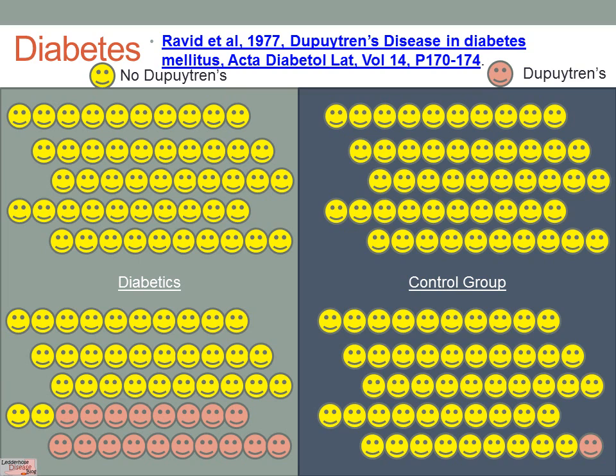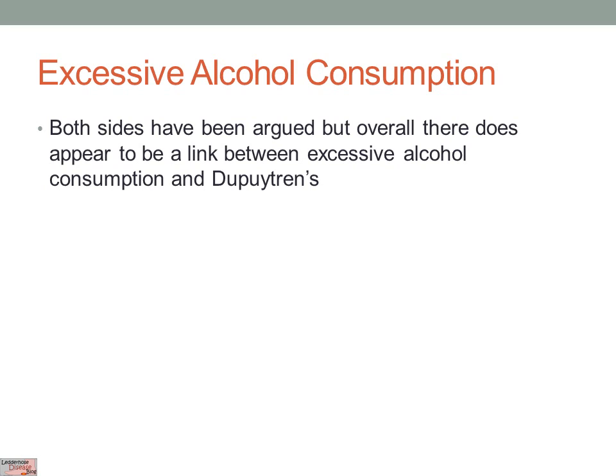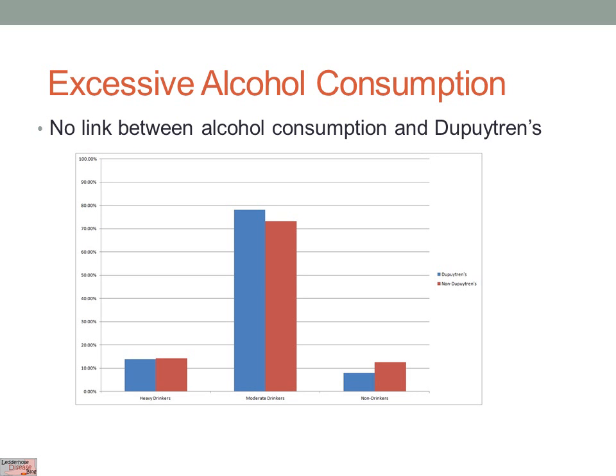Excessive alcohol consumption is another risk factor - it doesn't apply to me as I don't drink, but for many people it's a contributing factor. If you drink excessively you increase your chances, but it doesn't guarantee you'll get Dupuytren's or Ledderhose. Both sides of the argument have been made. In this first paper, they looked at alcohol consumed by Dupuytren's patients versus non-Dupuytren's patients, and the levels were actually quite similar - the proportion of heavy, moderate, or non-drinkers was very similar in both groups.